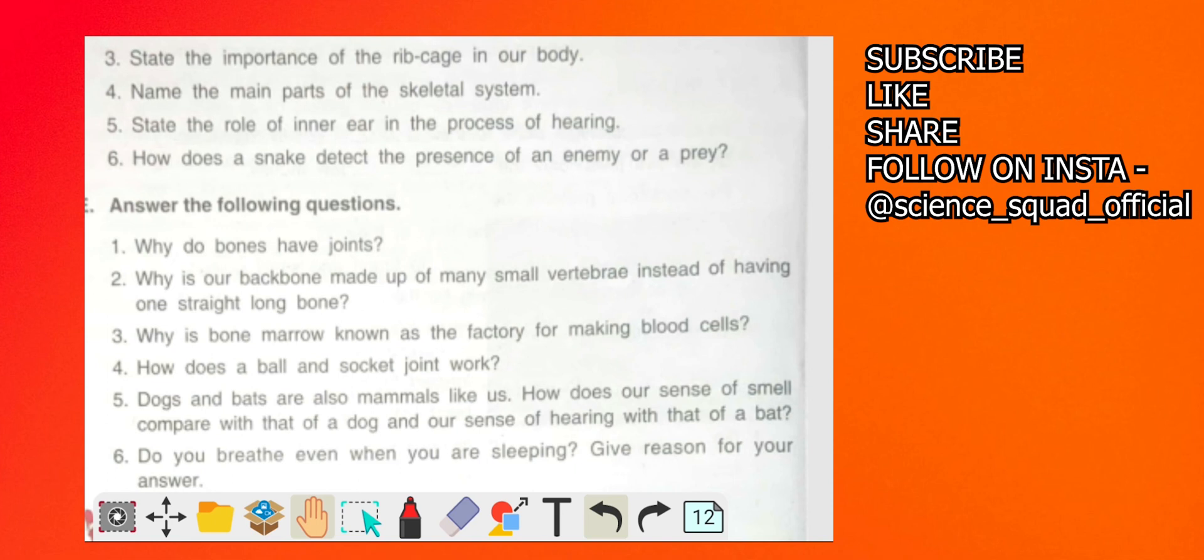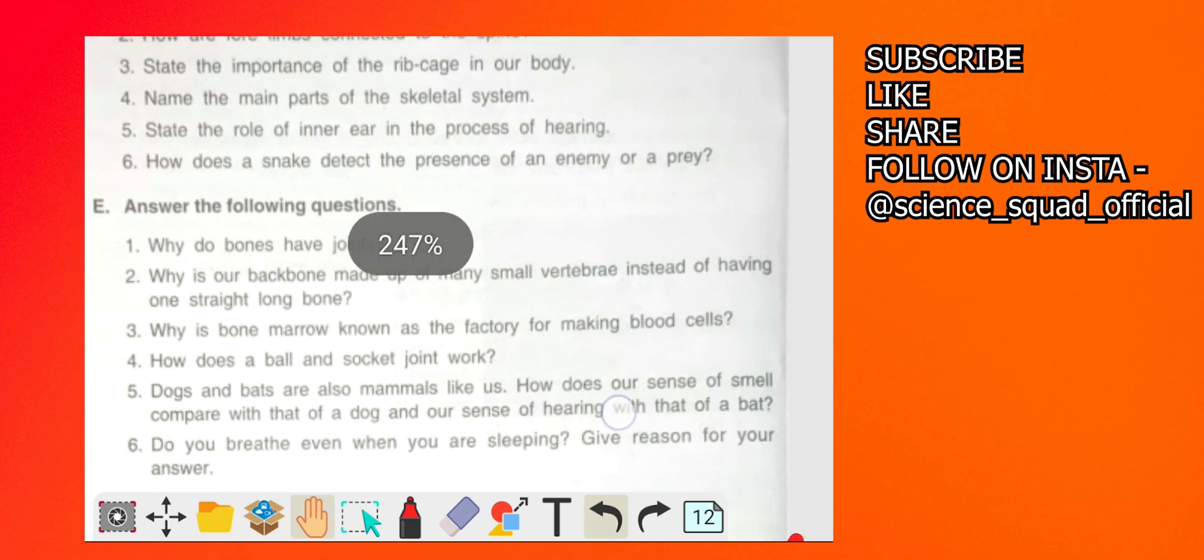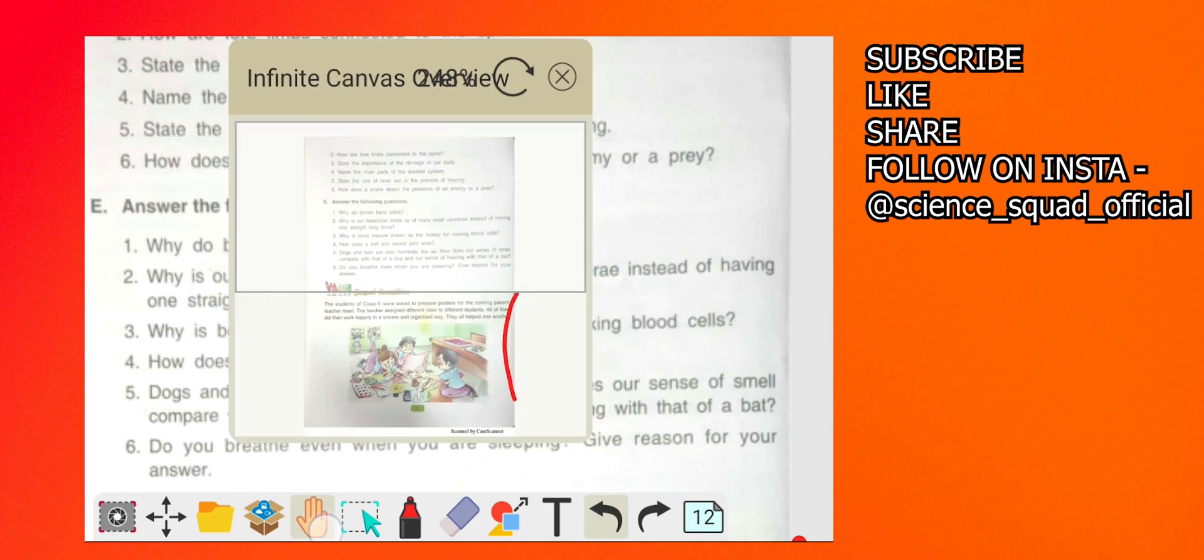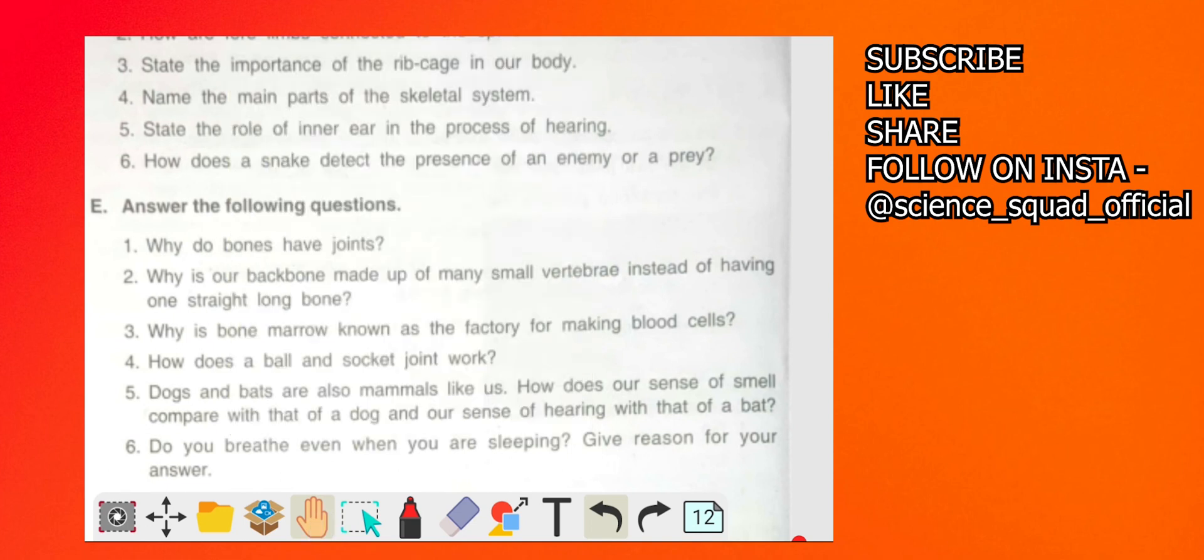Why does bones have joints? Very simple answer - yes, bones have joints so that we can move them. Why is our backbone made up of many small vertebra? If it is not made up of many small vertebra it will become stiff and will not be able to bend or twist.